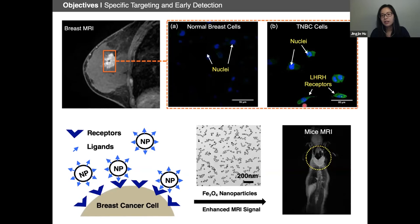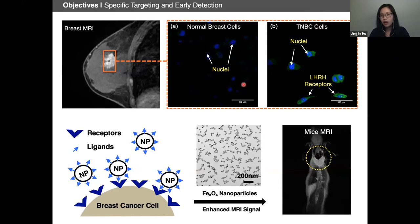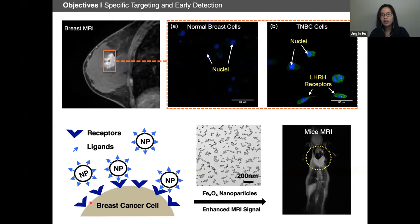Triple negative breast cancer tumors do not express the three commonly expressed receptors found on the majority of tumors. But over 50% of triple negative breast cancers exhibit another type of receptor called luteinizing hormone-releasing hormone, LHRH. These receptors — shown expressing green fluorescence on cancer cells — are absent on normal cells. Taking this biological feature, we're designing LHRH-functionalized nanoparticles aiming to specifically target those overexpressed LHRH receptors on the cancer cells.